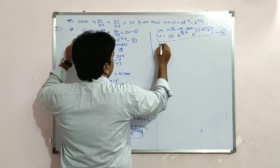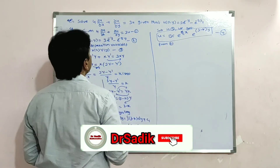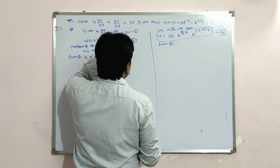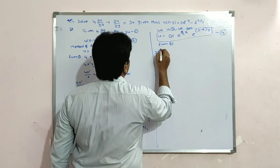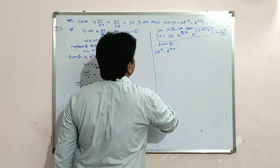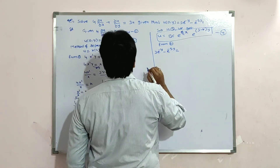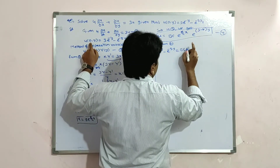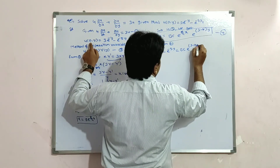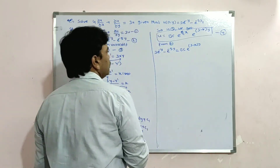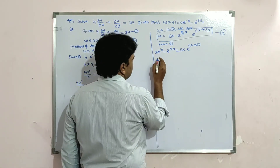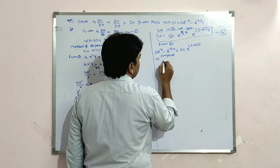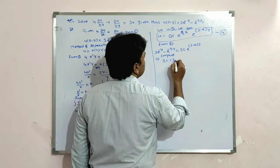From condition 2, u(0,y) = 3e^(-y) − e^(-5y). Substituting x = 0: BC·e^((3−k)y) = 3e^(-y) − e^(-5y). Comparing both sides: first term gives BC = 3 and (3−k) = −1, so k = 4.